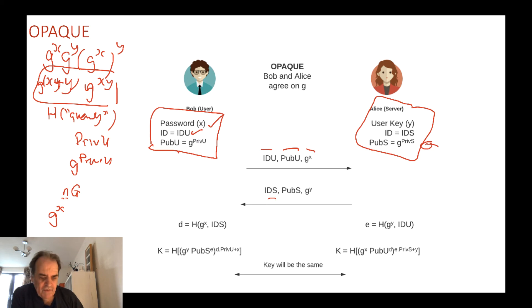Then Alice returns back her server name, her public key that she wants to use, and takes her secret and does G to the power of Y. Again Bob can't determine what Y is because G to the power of Y mod P is a difficult problem to find the value of Y.